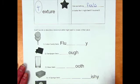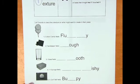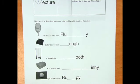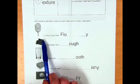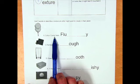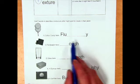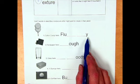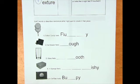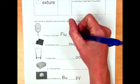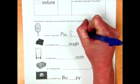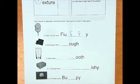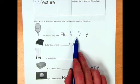Down here at the bottom of the page, we're going to talk about some different objects that have different textures. So first I have a picture of cotton candy. Cotton candy feels fluffy. So I want to think of the word fluffy and what's missing. It's actually two F's that are going to go right here. Cotton candy feels fluffy.